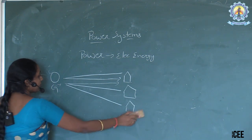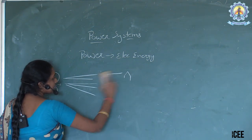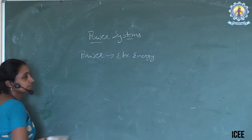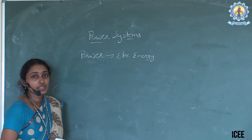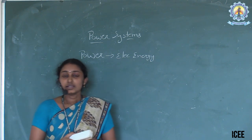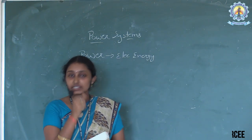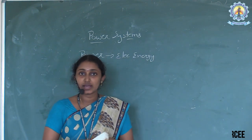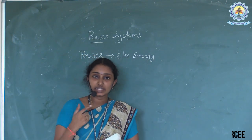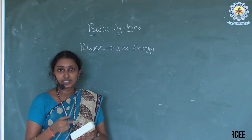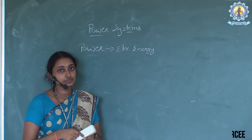Power system is generally defined as a system which is arranged in a sequential manner to generate the power, to distribute the power, and to transmit the power.